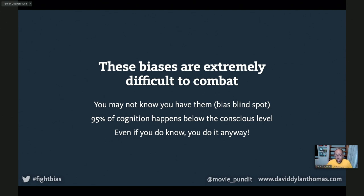There's a bias called anchoring. The way it works is I could ask everybody at this conference to write down the last two digits of their phone number, then say 'okay, we're going to bid on this bottle of wine.' Those of you who wrote down a lower number, you'd bid lower. Those of you who wrote down a higher number, you'd bid higher. It's called anchoring — it's a thing. And here's the thing: if I told you about anchoring in advance of the experiment, you'd still do it. In fact, if I paid you cash money to not perform that bias and we did the experiment, you'd probably still do it.